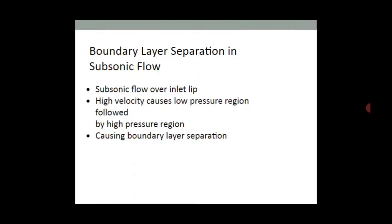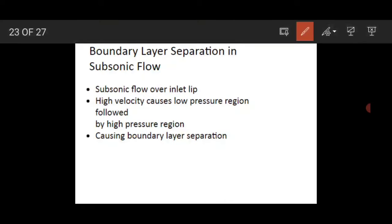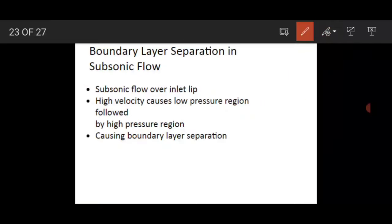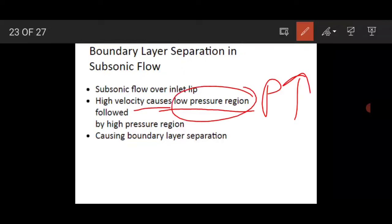In subsonic flow over the inlet lip, high velocity flow causes a low pressure region followed by a high pressure region, which causes boundary layer flow separation. In supersonic flow, the shock wave interaction at the wall causes boundary layer flow separation. These conditions — both subsonic and supersonic — lead to boundary layer separation problems.